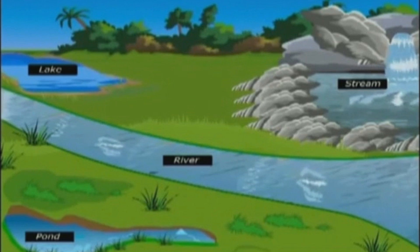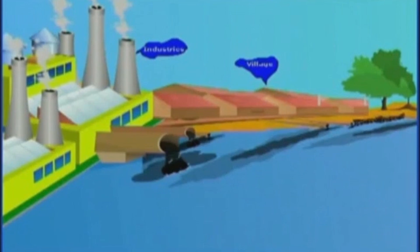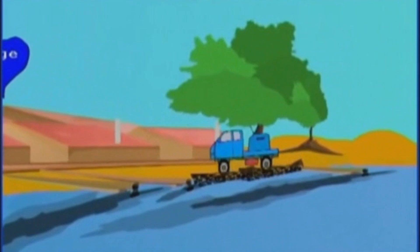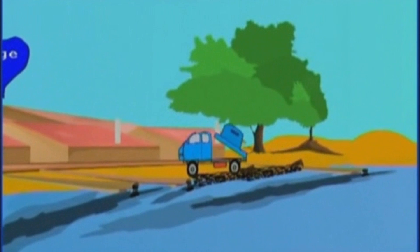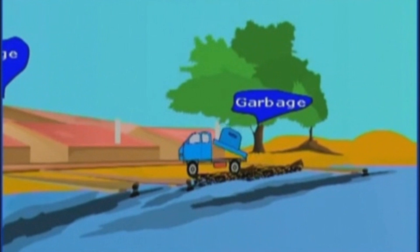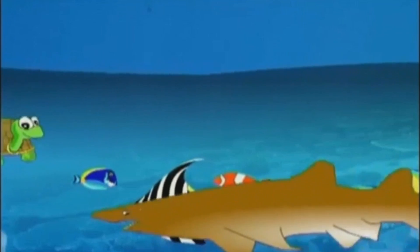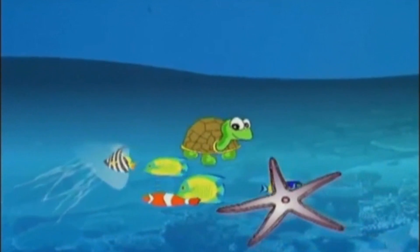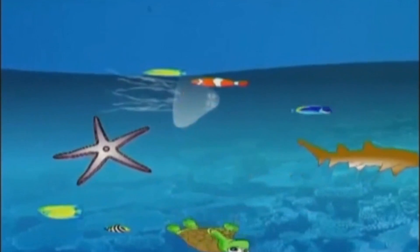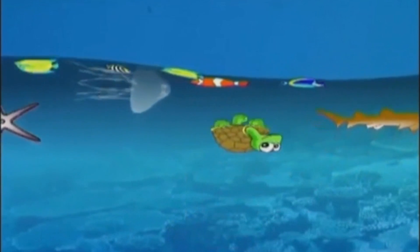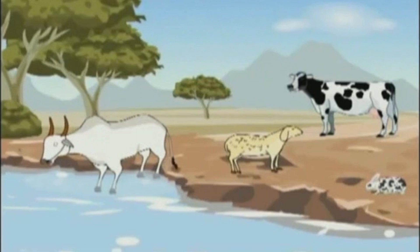About 72% of Earth's surface is covered by water. Water in ponds, lakes, and even seas is polluted by human activities. Pollution of water resources is a big problem, as it changes the quality of water. This kills aquatic microorganisms, plants, and animals, destroying the entire aquatic ecosystem.